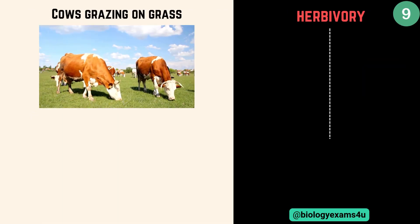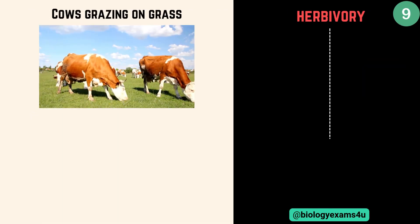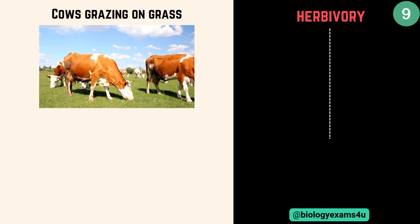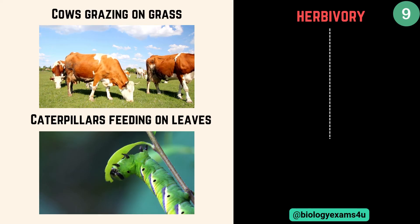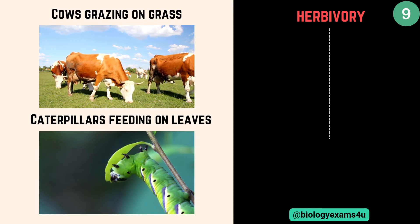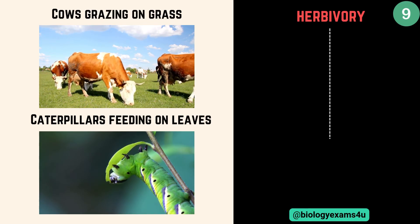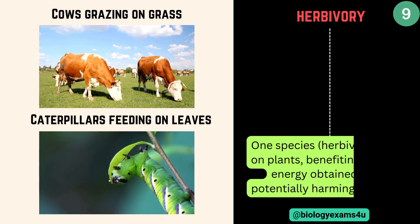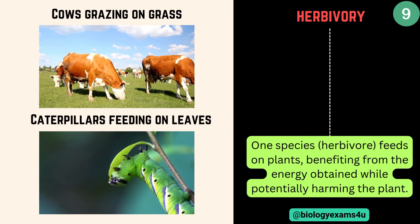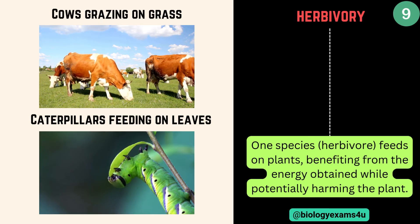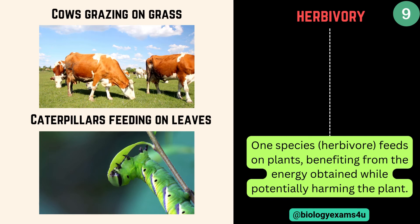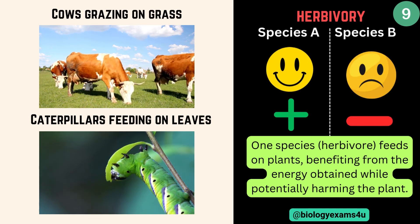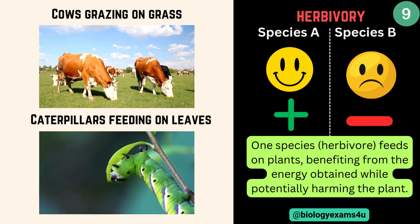Next interaction is herbivory. Cows grazing on grass — cows obtain nutrition while grass may suffer damage. Caterpillars feeding on leaves of various plants — caterpillars get energy while damaging the plant leaves. In herbivory, the herbivore feeds on plants, benefiting from the energy obtained while potentially harming the plant. So species A is benefited, whereas species B, the plant, is negatively affected.